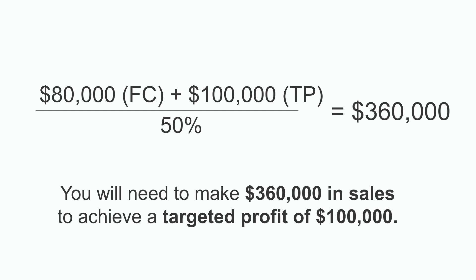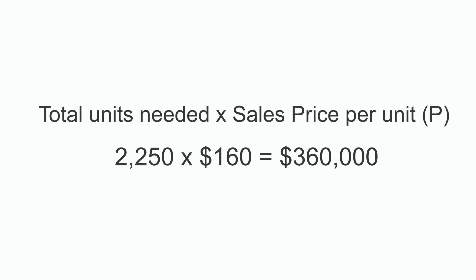Therefore, you need to make $360,000 in sales to achieve a targeted profit of $100,000. Another way to calculate the total sales required is to take the total units needed — 2,250 — times the sales price per unit of $160, which also gives you a total of $360,000.